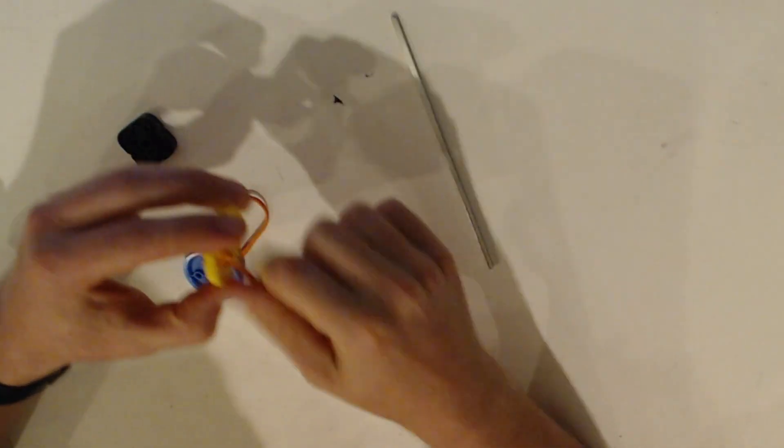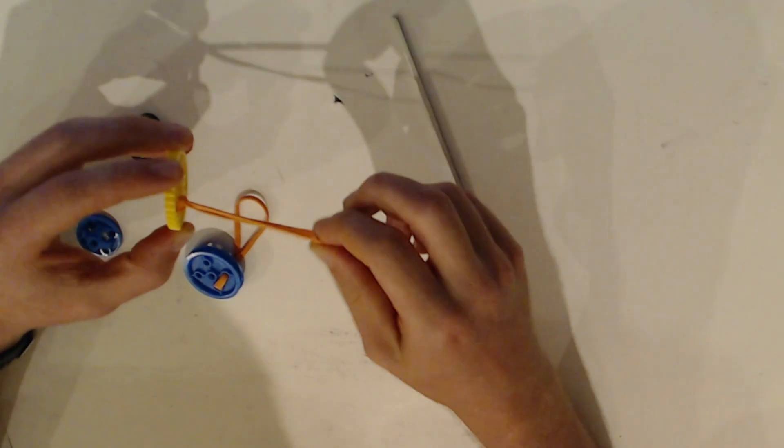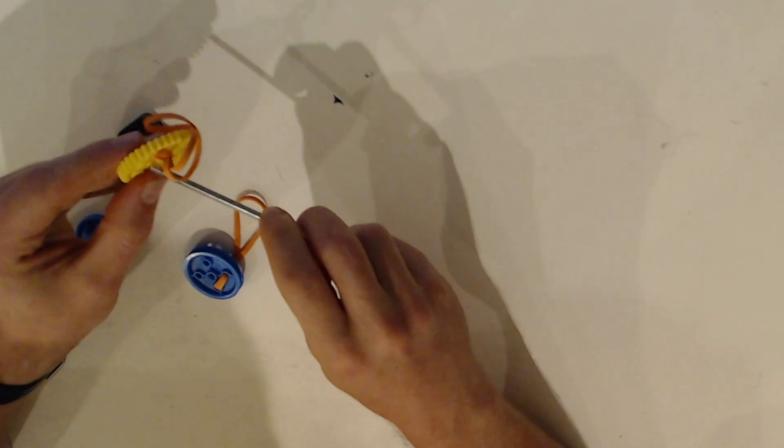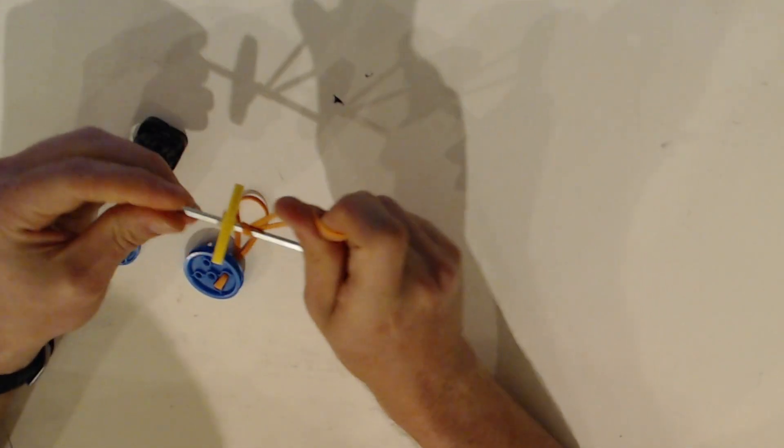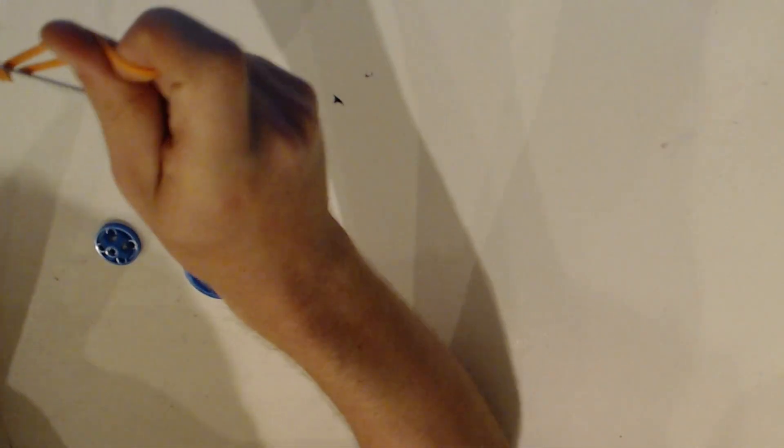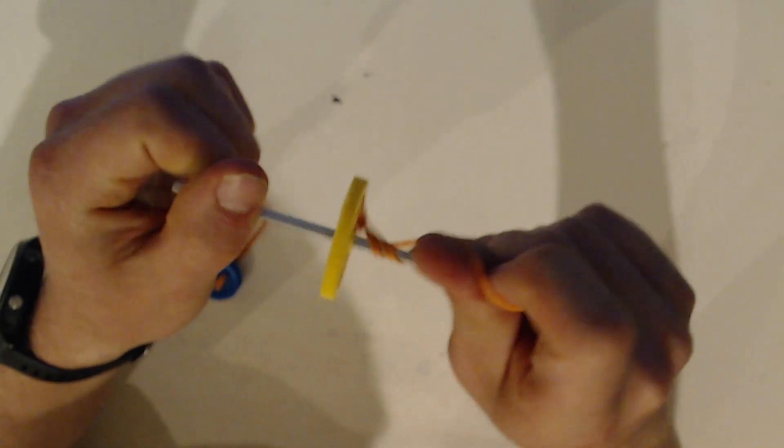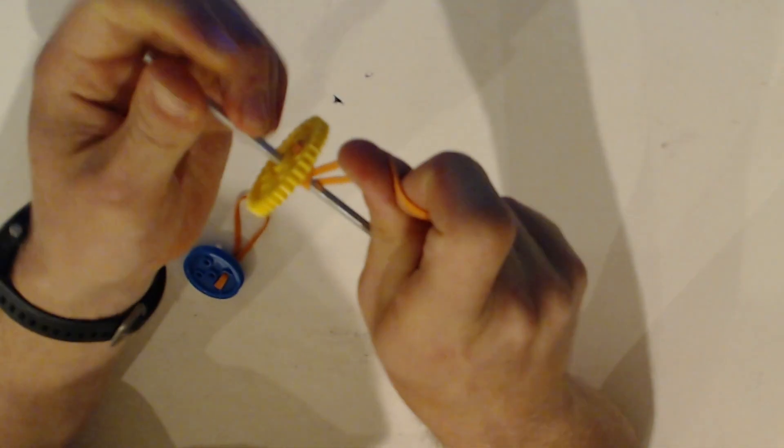And if you did it right, it'll stay in there like that. If you did it wrong, it'll just pop right through and you'll be set, and you'll get to do it again. You get to rewatch this video. And then you'll notice I can take this and I can just spin it around the shaft. And as I spin the shaft, you can see that rubber band gets tighter and looser.